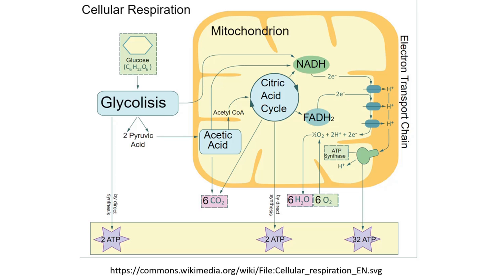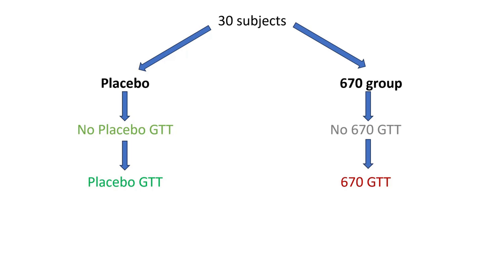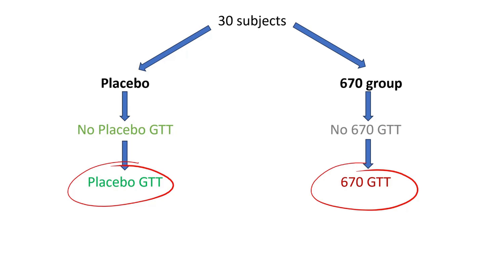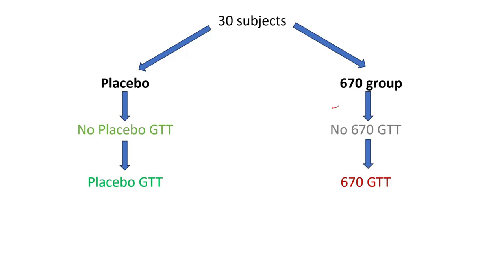When we shone light on this area, the mitochondria became more efficient. When it became more efficient, the citric acid cycle was able to spin faster, utilizing blood glucose — which caused it to go down. If that's the case, we should notice an increase in carbon dioxide. Looking at CO2 output across the two groups, there wasn't any statistically significant difference across the board — that may have been due to selection.